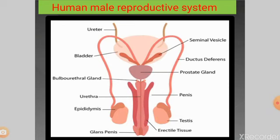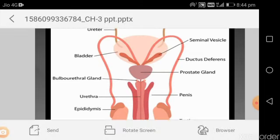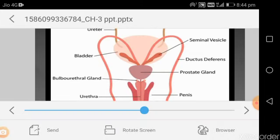Above the testes, you can see the epididymis. The epididymis is a part which temporarily stores the sperm secreted by the testes. The diagram shows a pair of testes and the accessory ducts in detail.